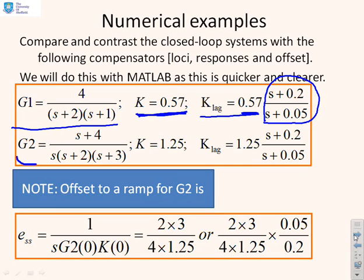Example 2, you'll see the difference here is we've added an integrator into the system. See this S here. And again, we've got a K of 1.25 and K lag uses the same K, but introduces some dynamics. And what we want to do is compare what we get with just proportional compensation and with a lag compensator. And we're going to look at the loci, step responses, and offset.